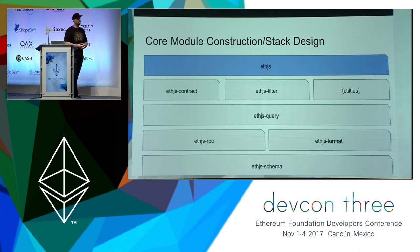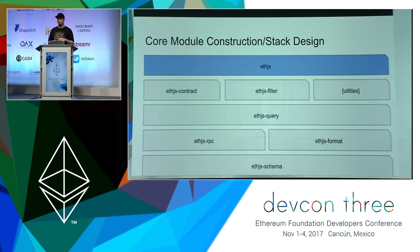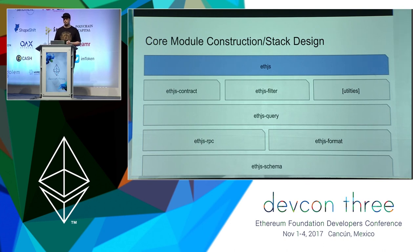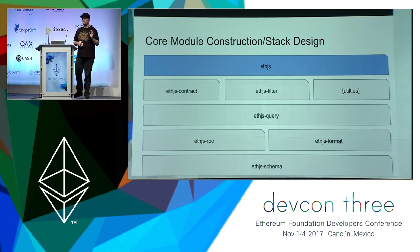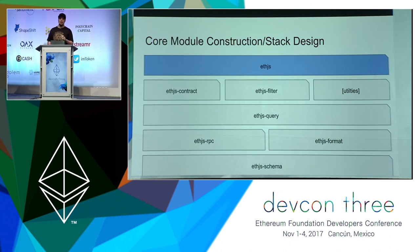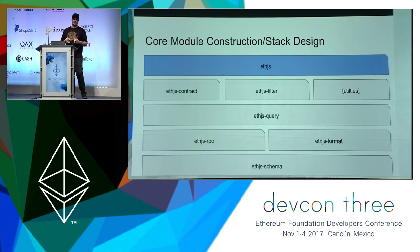The way I've constructed ETH.js — at least the core interface — is you have your contract module, filtering modules and so forth. I have my querying layer, which combines both an RPC module and a formatting module, and basically formats all your inputs and outputs to the RPC layer automatically. ETH.js schema is one of the better things I did here: I just laid out in a JSON file the entire RPC specification and all the inputs and outputs, so you can auto-generate the entire RPC query layer. This makes it a very easy process to update or for others to add methods.